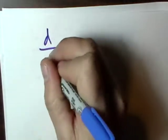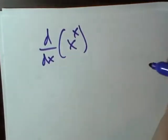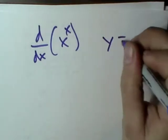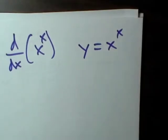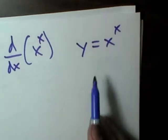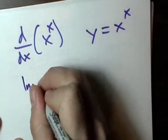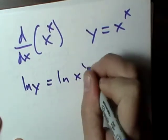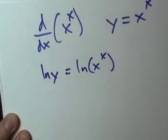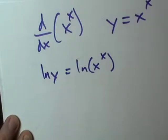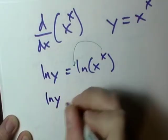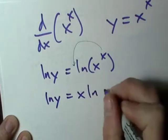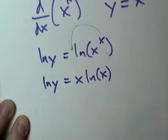So d/dx of x to the x — just go back to basics here. That is y equals x to the x. That's the function that we want the derivative of. So what we'll do is we'll take the natural log of both sides: natural log of y equals natural log of x to the x. And remember the power rule on exponents — I can just take the exponent and stick it out in front.